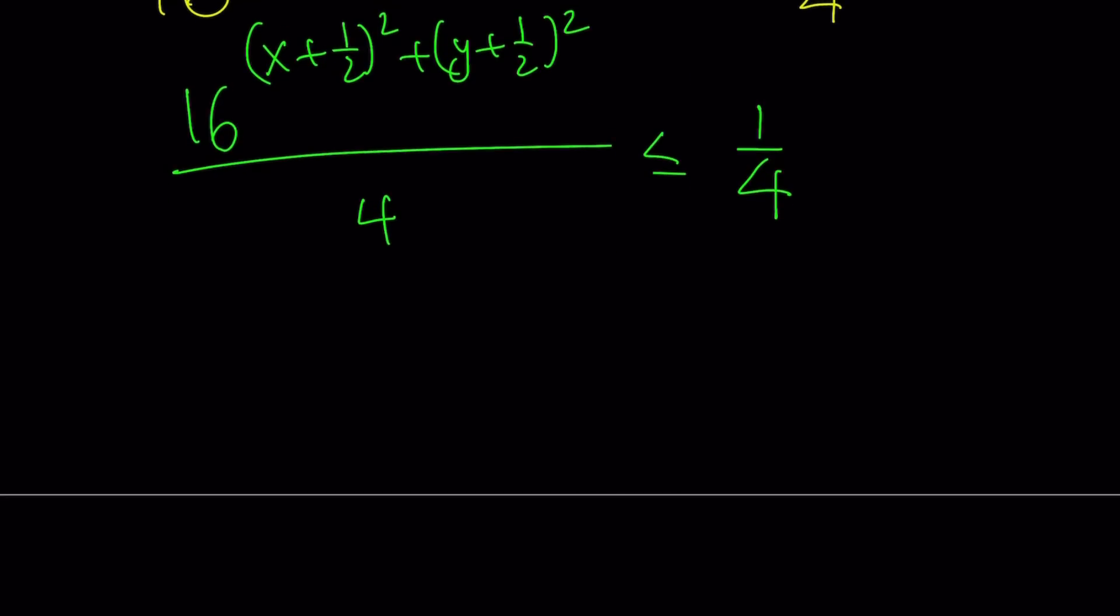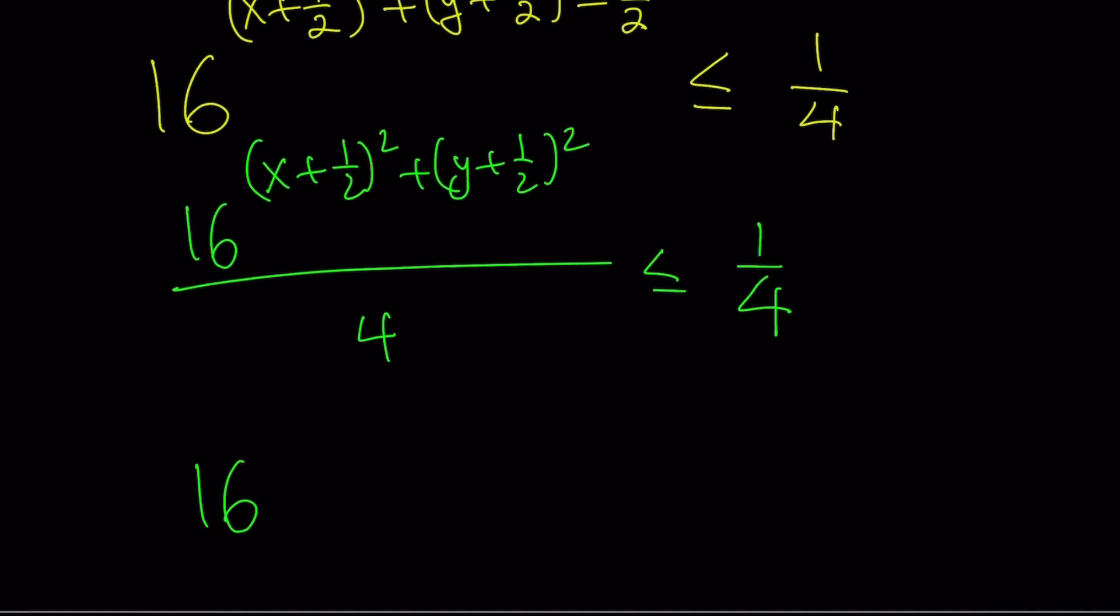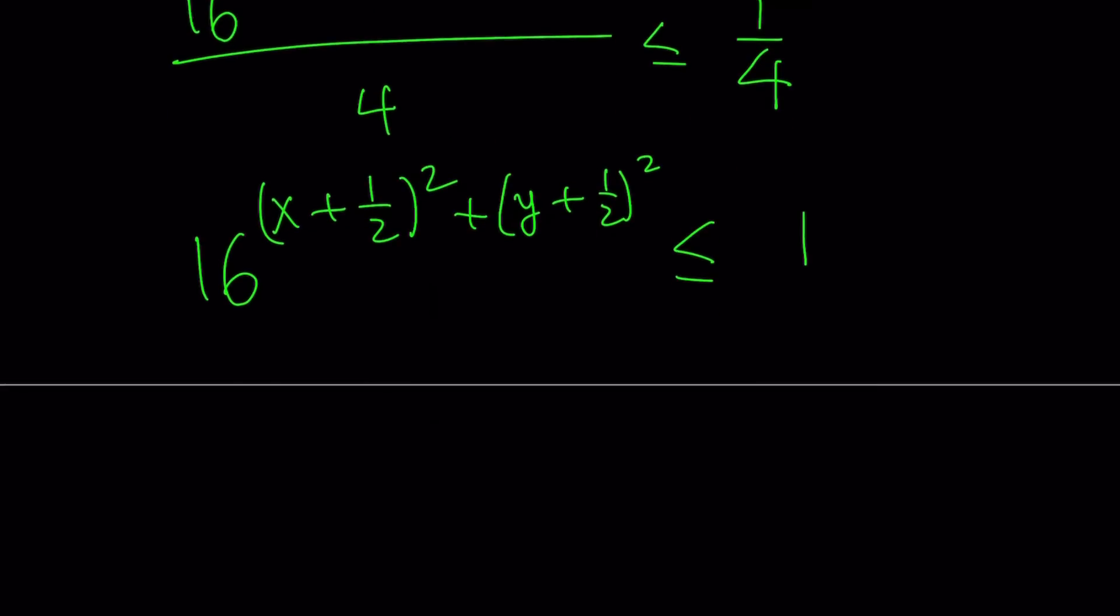Now, this is nicer because now I can multiply both sides by 4. And my expression is going to be much nicer. And I could probably skip the log part because I already talked about it. And I hope you don't mind me taking less time here. So, this is going to be less than or equal to 1. And this is really nice. Just think about it. If the exponent is 0, you're going to get 16 to the power of 0, which is equal to 1. And you want this to be less than or equal to 1.